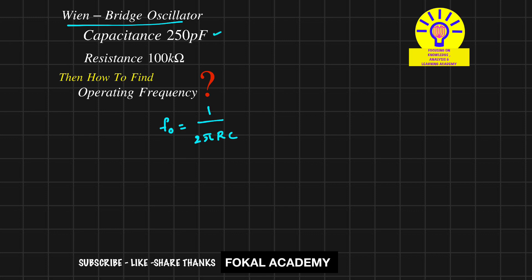Here R is given and C is given. Now substitute these two values in this equation. When we get operating frequency, it becomes 1 by 2π into R is given as 100 kilohms, and the capacitance is given as 250 picofarads. Pico means 10 power minus 12.